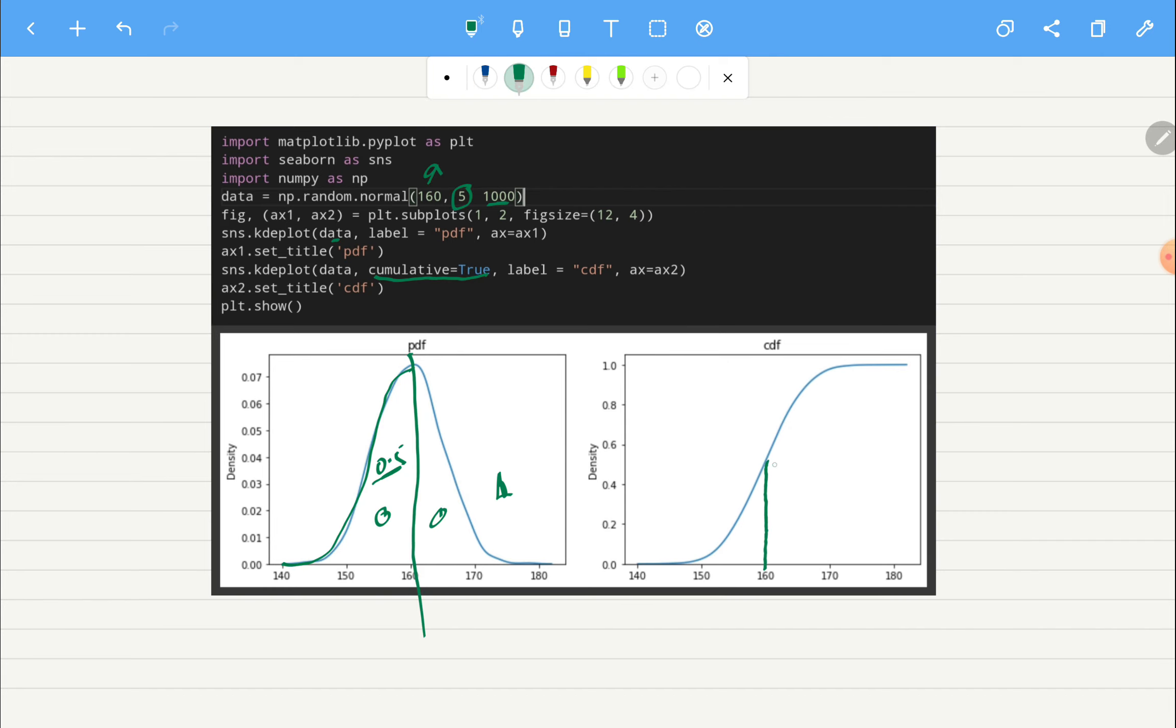And if you want to see that same thing on CDF we can extend this line all the way to here where it is intersecting. And now if we see it on our y-axis we can see that it is again coming to 0.5. So the probability will be 50-50 to be on either of the sides.